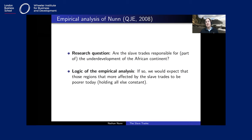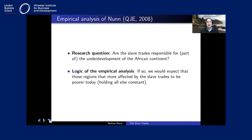The logic of the statistical analysis is: if the slave trade did have long-term detrimental effects which persist until today, then looking within the continent, those regions more affected by the slave trades should be less developed — or poorer today — by whatever metric you use: per capita GDP, infant mortality, etc.